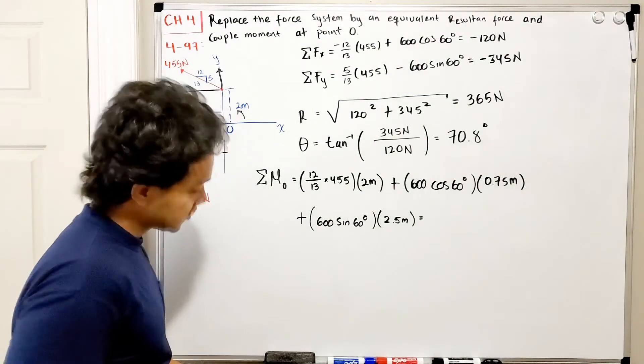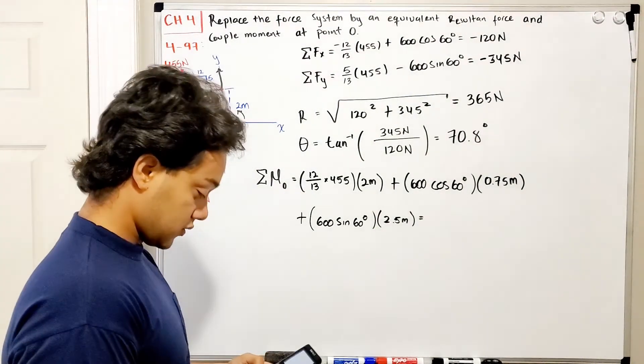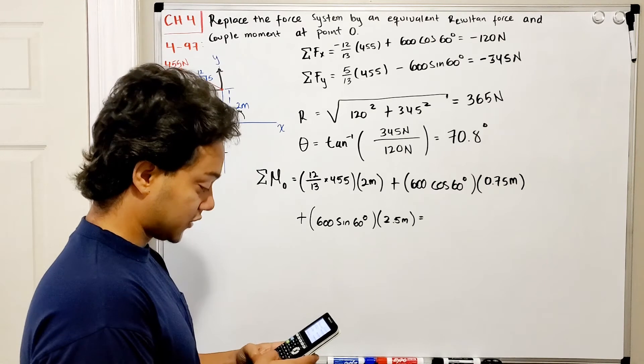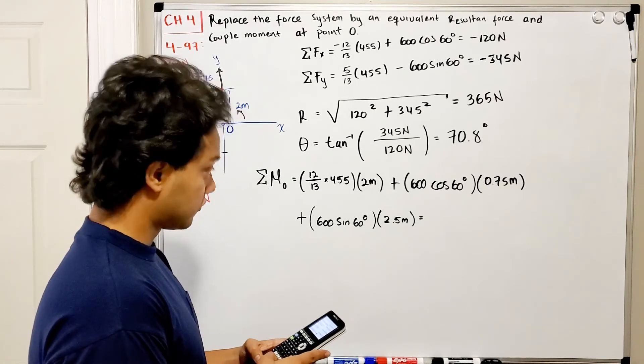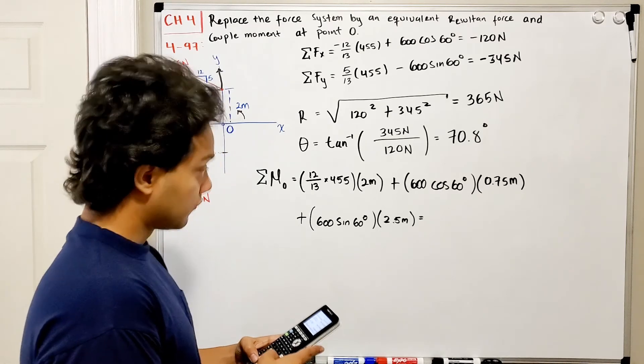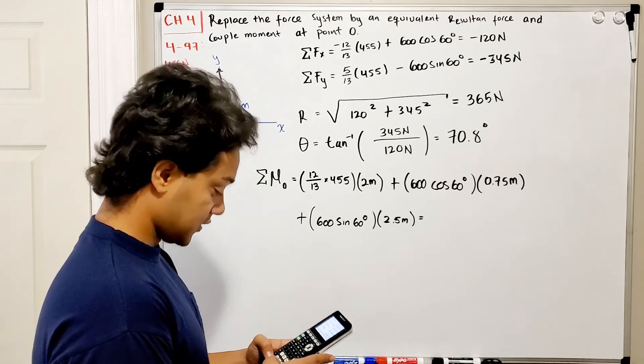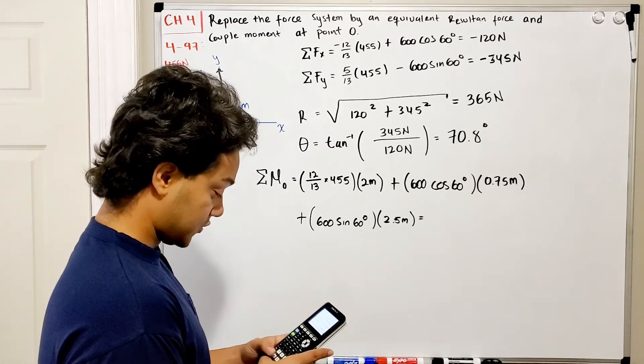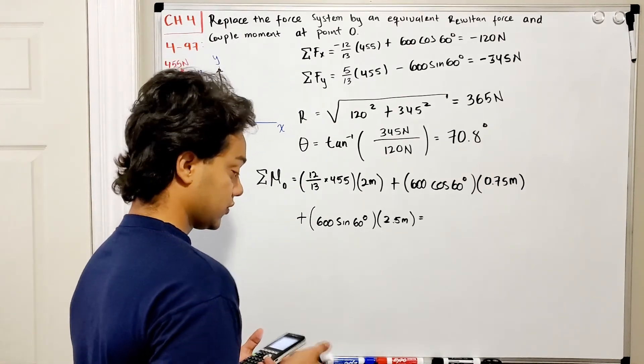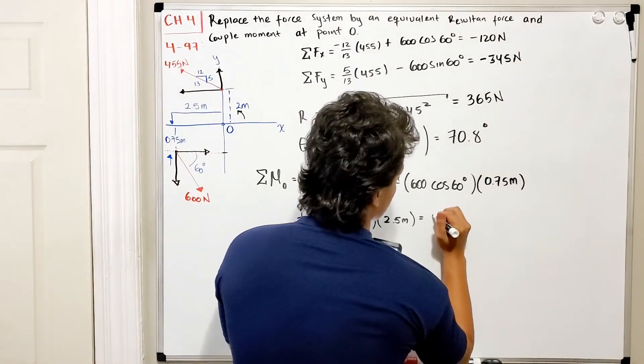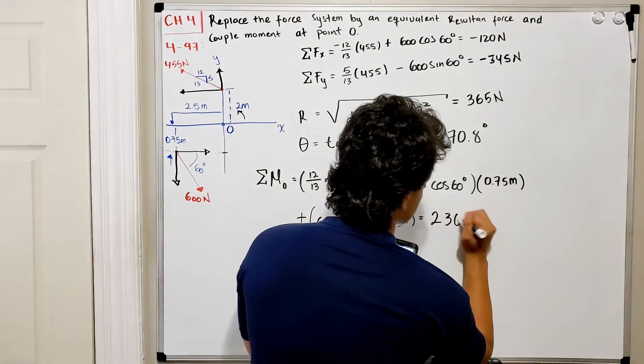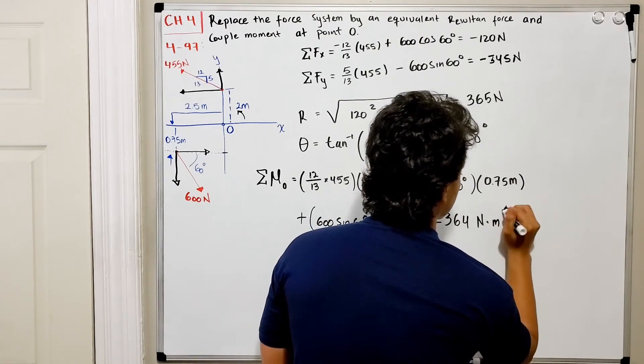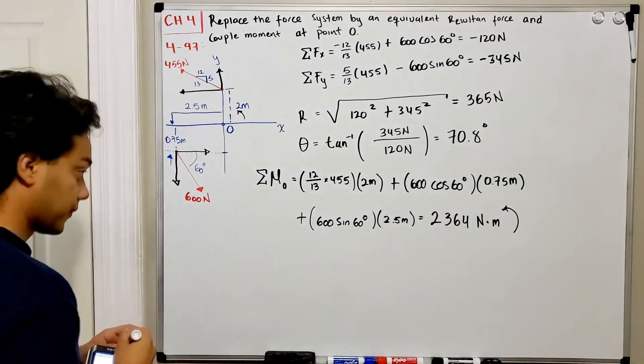Using our calculator: 12 out of 13 times 455 times 2, plus 600 cosine 60 times 0.75, plus 600 sine 60 times 2.5. This equals 2,364 newton-meters, all going counterclockwise. That's the direction.